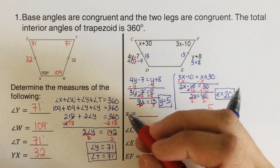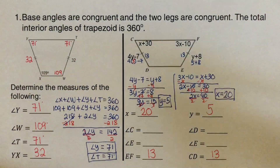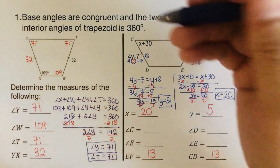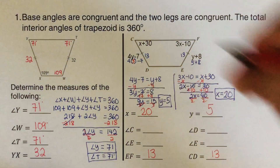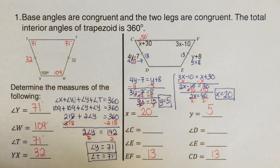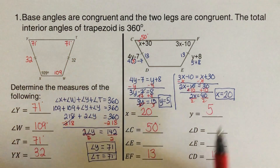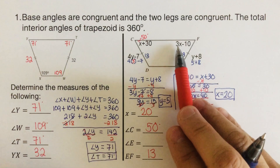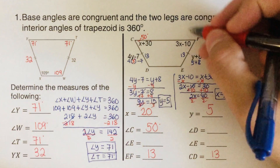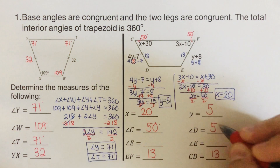With x equals 20, we find angle C: 20 plus 30 equals 50 degrees. And angle D: 3 times 20 minus 10 is 60 minus 10, which is also 50 degrees. So both base angles C and D are 50 degrees.